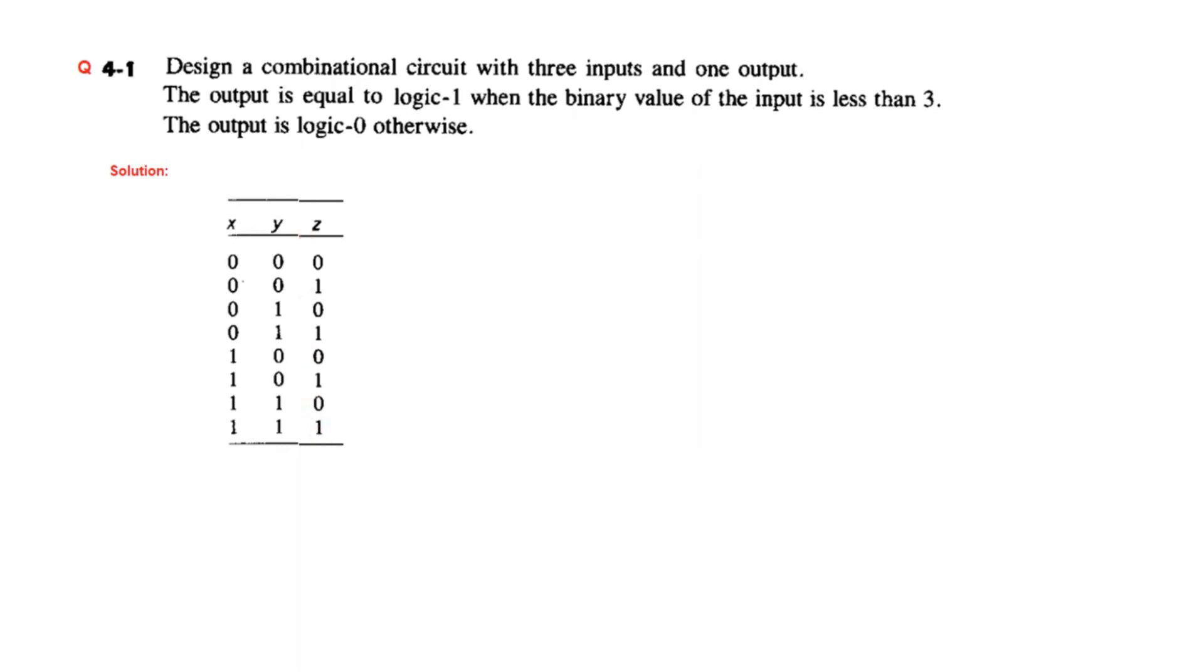This is the truth table. Now we have to find the equivalent values. Although the problem says binary values, we'll use the decimal equivalent. Let's see: the decimal equivalent values are 0, 1, 2, 3, 4, 5, 6, and 7.